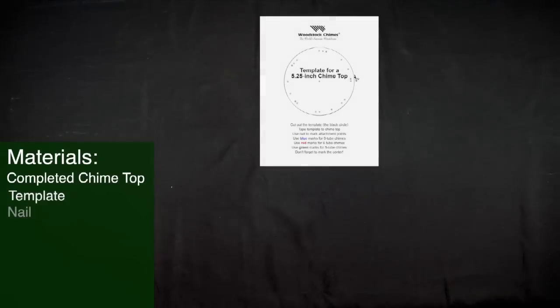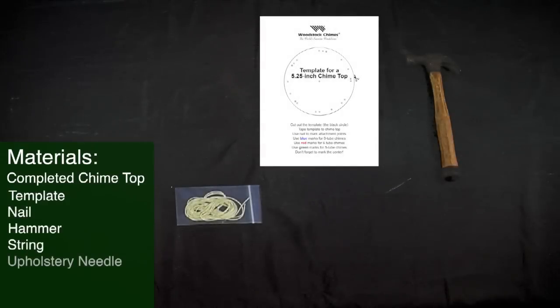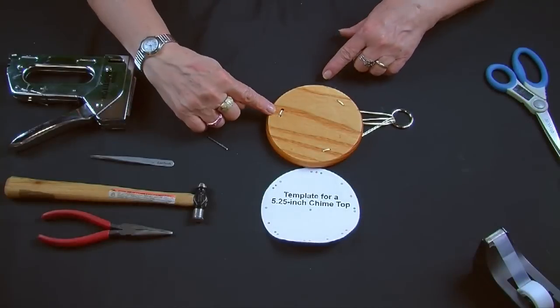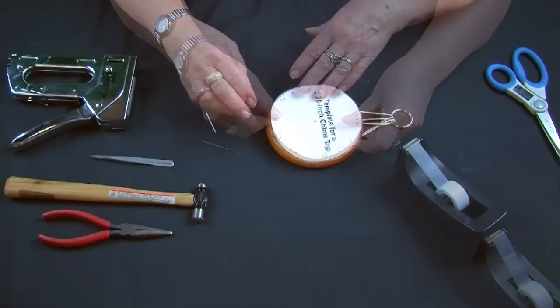For this step we will be using your chime top, template, a nail, a hammer, string, upholstery needle, a staple gun, and your chime tubes. We're going to be using the template, which we've cut out and taped to the chime top.